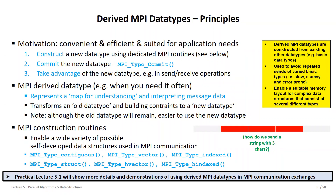The way this works is you create a new derived data type using MPI routines, then commit it to the MPI environment so that MPI knows about it. You can think of a derived MPI data type as a map describing what basic data types will flow over the wire. Once committed, you can use it in send and receive operations. We'll cover several of these types in the next few slides, but they'll be best understood in the practical Lecture 5.1 with live demos.